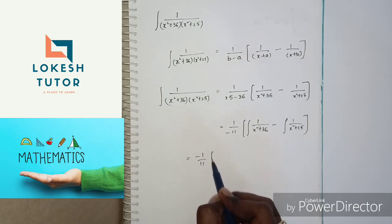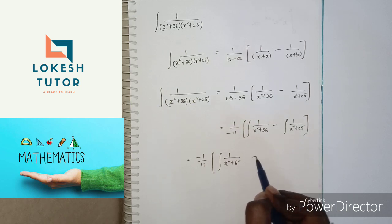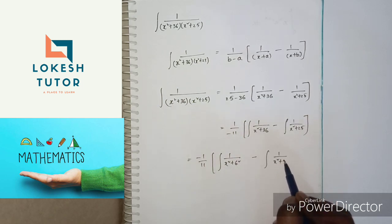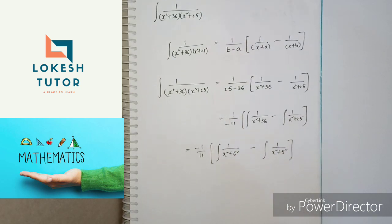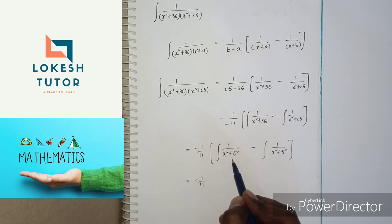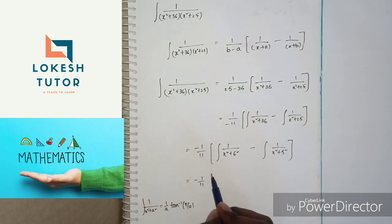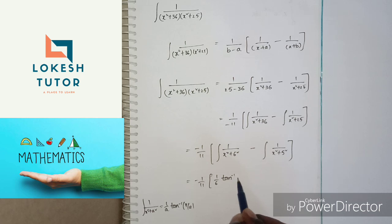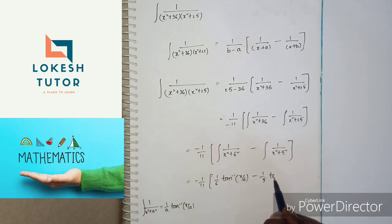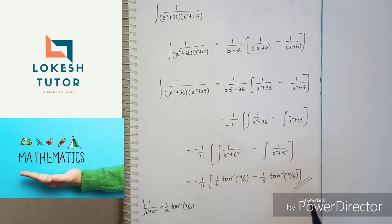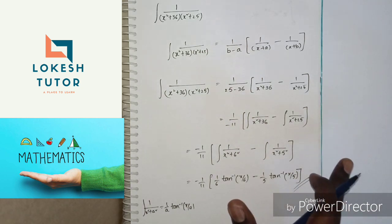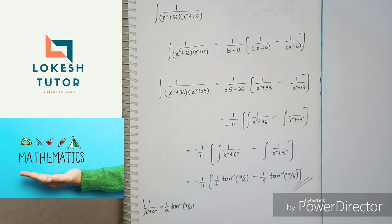Minus 1 by 11 into: integral of 1 by (x squared plus 6 squared) minus 1 by (x squared plus 5 squared). Using the formula: integral of 1 by (x squared plus a squared) equals 1 by a times tan inverse of x by a. This gives minus 1 by 11 into 1 by 6 tan inverse (x by 6) minus 1 by 5 tan inverse (x by 5). If you like this video, please like, share, and subscribe.